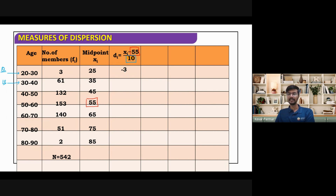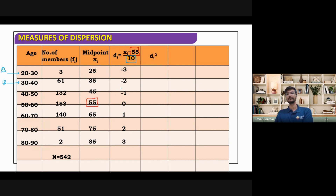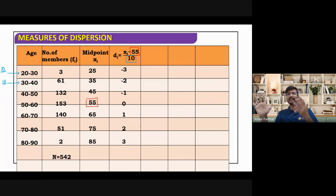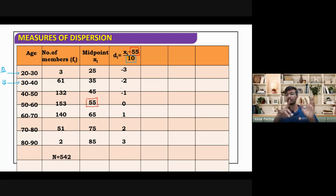di starts at minus 3 and increases: minus 3, minus 2, minus 1, 0, 1, 2, 3. We use di in place of xi. We calculate di squared: 9, 4, 1, 0, 1, 4, 9. Then fi·di and fi·di squared. Summation fi·di is minus 17 and summation fi·di squared is 765.